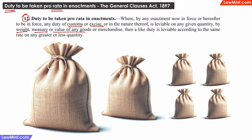This again is common sense, because if the duty to be paid on a 100 kg bag of rice is 100 rupees, then the pro-rata duty on a 25 kg bag will be 25 rupees, and the pro-rata duty on a 200 kg bag will be 200 rupees.